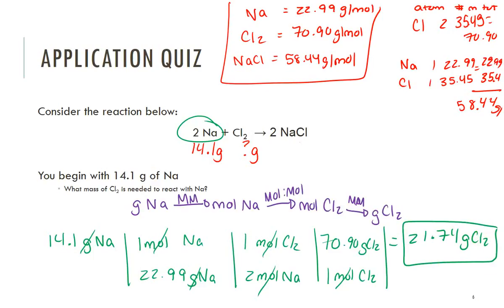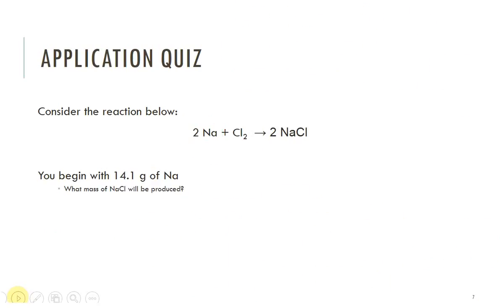If you get something like 80 instead, it's because you are not dividing by 2. You can always put things in parentheses, but make sure you are smarter than your calculator. We can go from grams of a reactant to grams of another reactant, or from grams of reactant to grams of product.